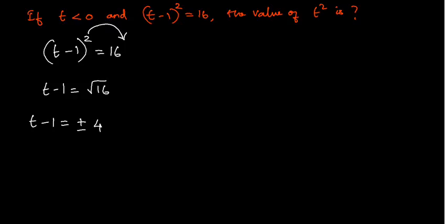Now it can be divided into two branches, that is, t-1 = 4 or t-1 = -4.